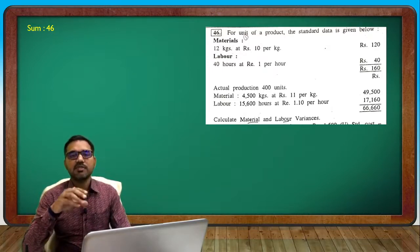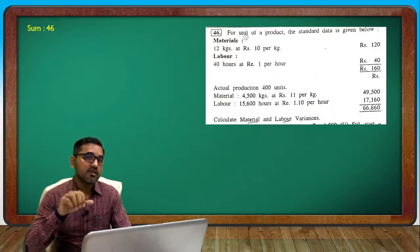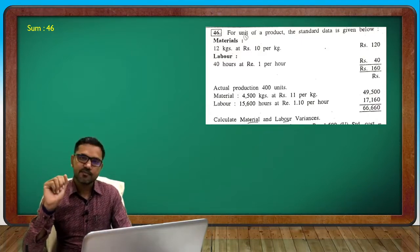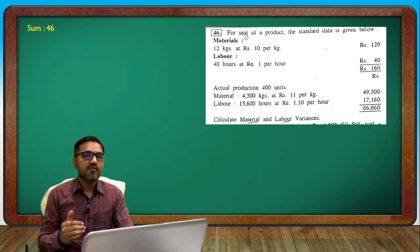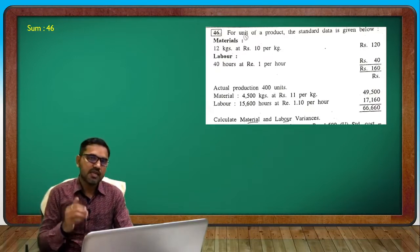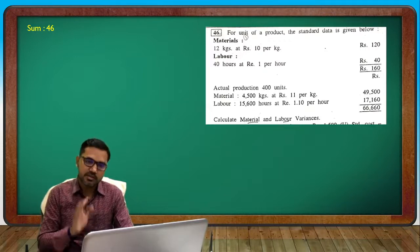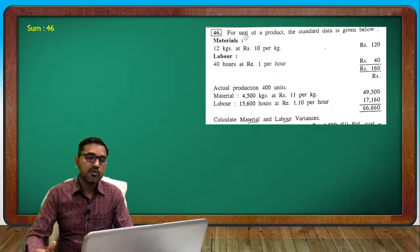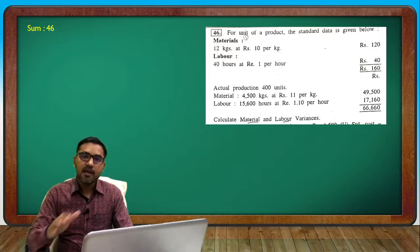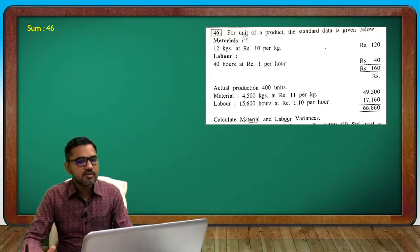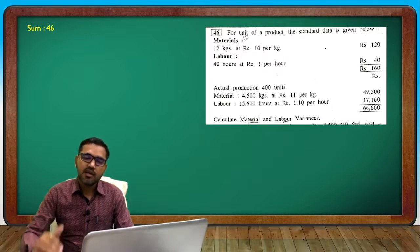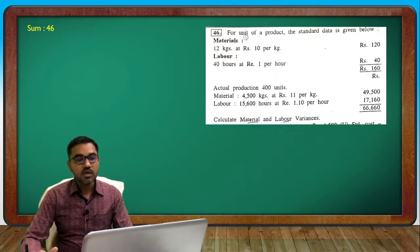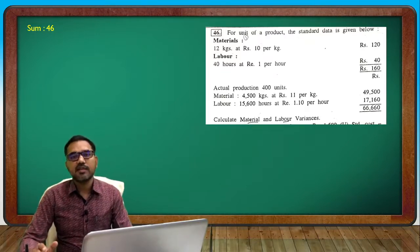Material: for 1 unit, the requirement is 12 kg and price is 10 rupees. Total labor is 40 hours at 1 rupee, so total cost is 160 rupees. Actual: material used is 4,500 kg at 11 rupees per kg. Labor: 15,600 hours at 1.10 per hour. Total actual cost is 66,660.